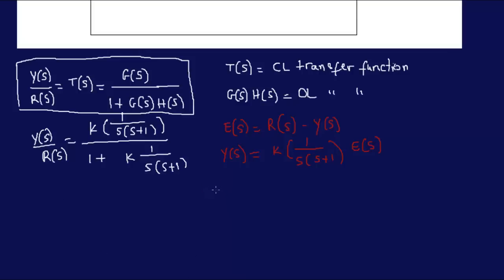Y of S is equal to K 1 over S, S plus 1, times E of S. What's E of S? E of S is R of S minus that. So, we have R of S minus, what's E of S? Yes, minus Y of S. Okay. So, we can just work this out.